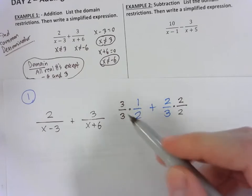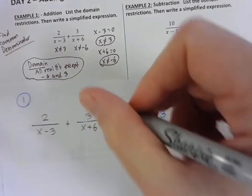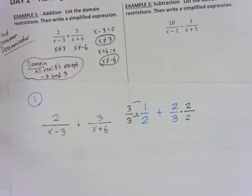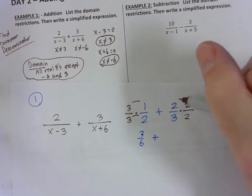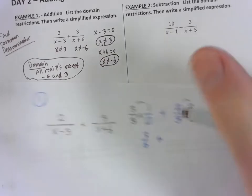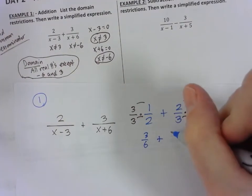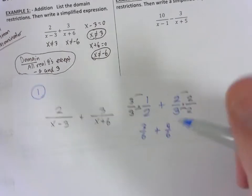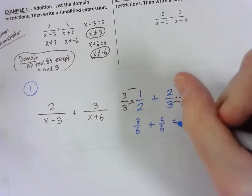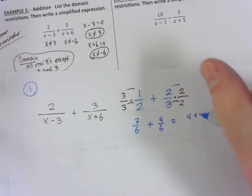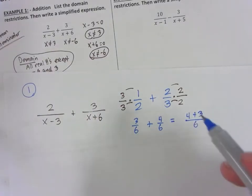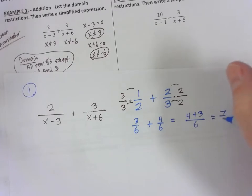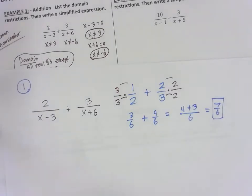Because 3 divided by 3 is 1, so that makes that equivalent. 1 times 1 half doesn't change the fact that that's 1 half. But what that's going to do is multiply and that's going to be 3 over 6. 2 times 2 is 4, 3 times 2 is 6. 4 sixths is equivalent to 2 thirds. But now that I have the same denominator, I can add the numerators and put that over 6. So 3 sixths plus 4 sixths is going to be 7 sixths. And that's a simplified fraction, 7 over 6. Sometimes we have to reduce it, but 7 doesn't divide 6 evenly, so that would be your answer.